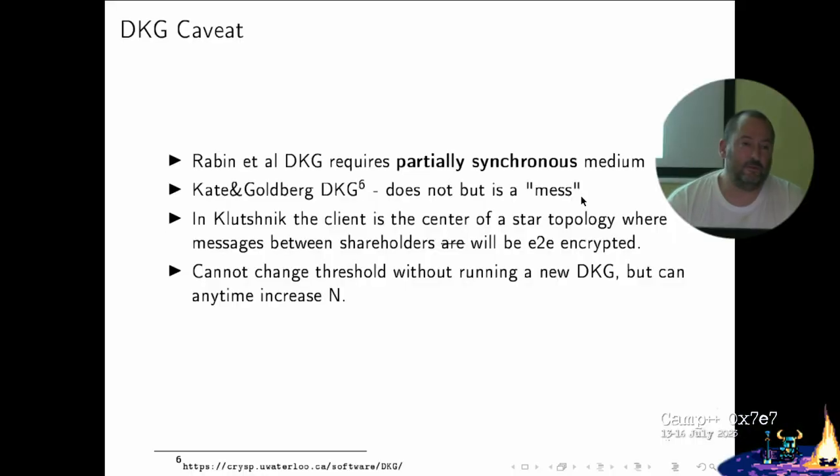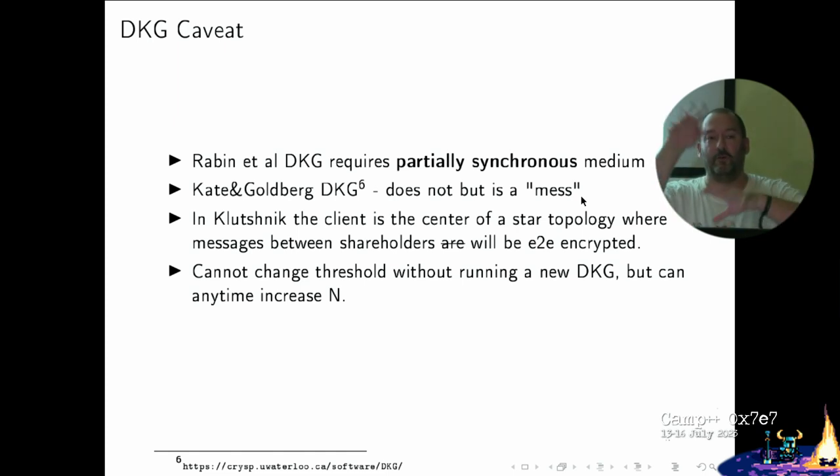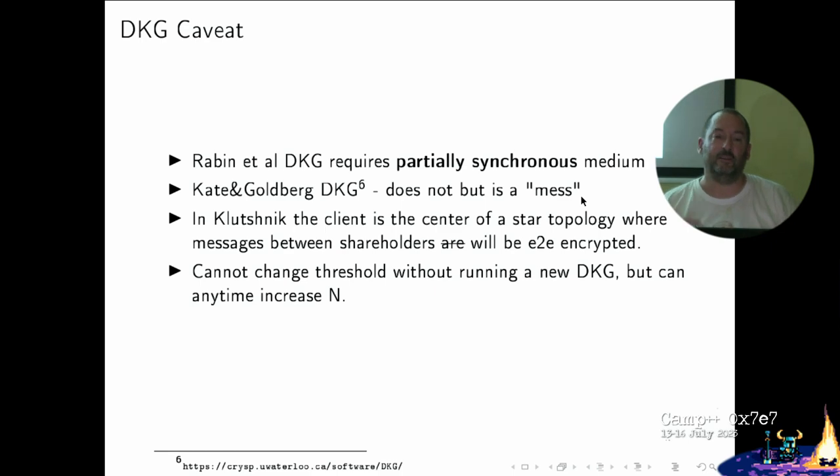Zcash also uses a DKG. My solution for the synchronicity issue is that the client is in a star topology communicating with all shareholders, but the shareholders do end-to-end encryption so the client has no access to what they communicate with each other. This enables multi-medium communication: one shareholder does Wi-Fi, another USB, another Bluetooth, another NFC. Otherwise they'd all need to support all mediums and do direct connections — impossible if one only does NFC and another only does Bluetooth. The star topology makes this much easier and enables the multi-medium setup.